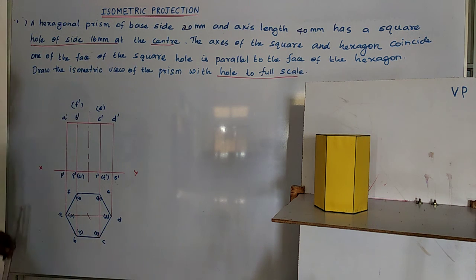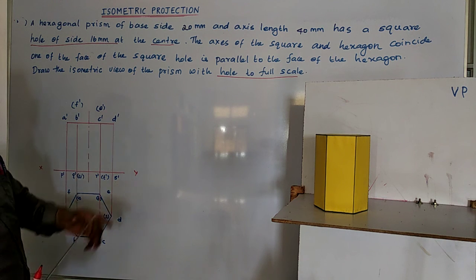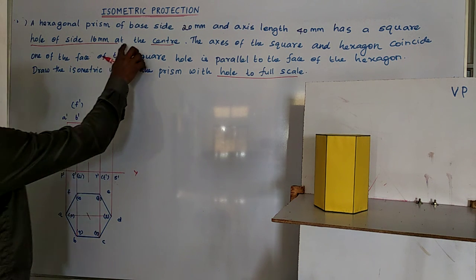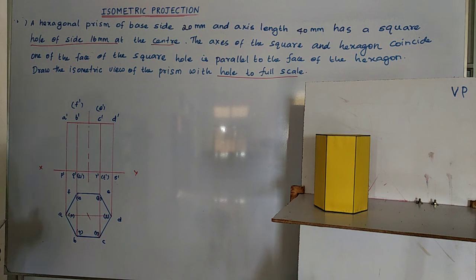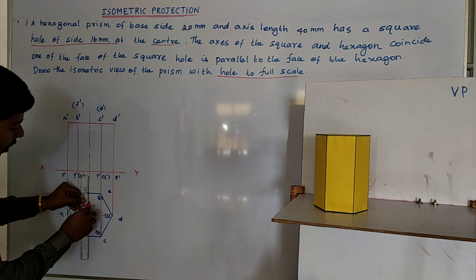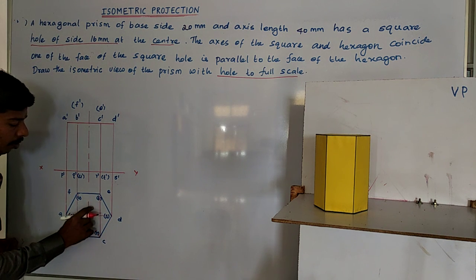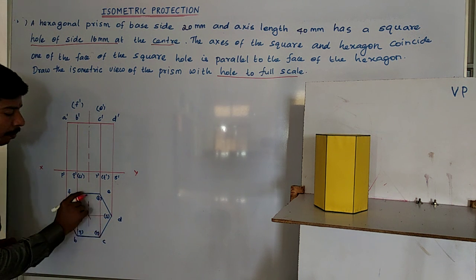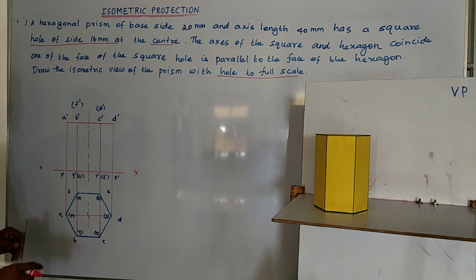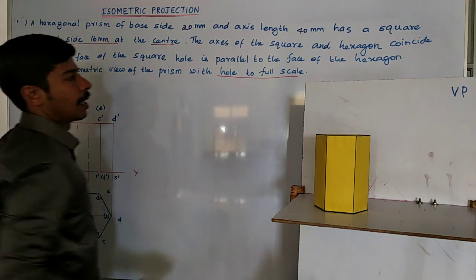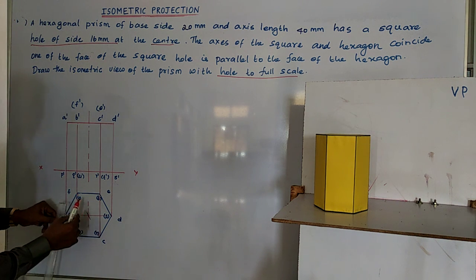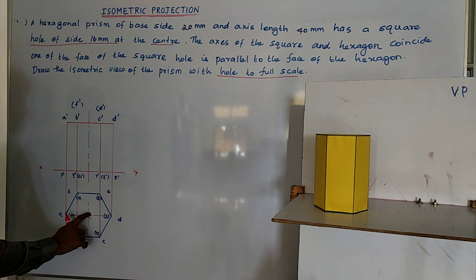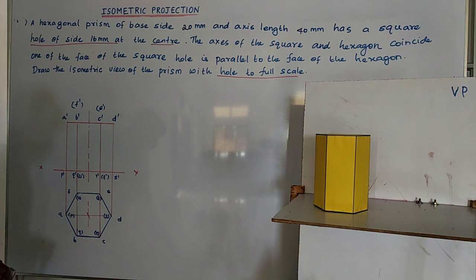Let us mark the square hole. There is a square hole at the center of side 16mm. At the center, I draw one horizontal and vertical line. The square hole has one side parallel to the side of the hexagon, so I take 8mm above and 8mm below from the center — totally 16mm.